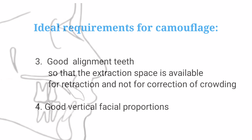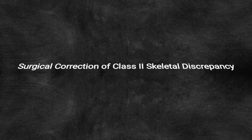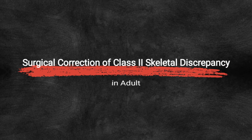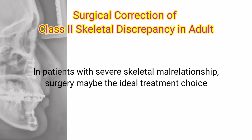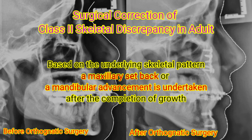Good vertical facial proportions. Surgical correction of Class II skeletal discrepancy in adults: In patients with severe skeletal malrelationship, surgery may be the ideal treatment choice. Based on the underlying skeletal pattern, a maxillary setback or a mandibular advancement is undertaken after the completion of growth.